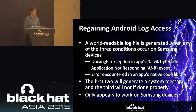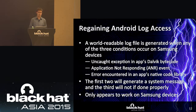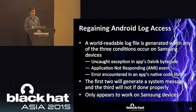Three conditions trigger a world-readable log file to be generated on Samsung builds of Android. First, an uncaught exception in the app's Dalvik bytecode will force-close the app and generate the world-readable log file. Second, an application-not-responding (ANR) event — where the app is doing too much work on its UI thread and not responding to UI events — also generates a world-readable log file. Third, if the application has a native code library and an error is encountered in that library, a world-readable log file is generated. The first two events display a system message to the user; the third does not if done properly.